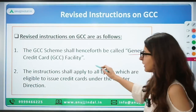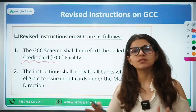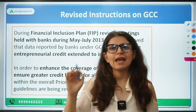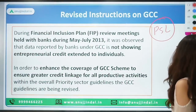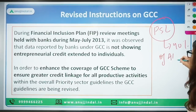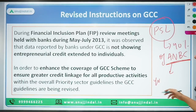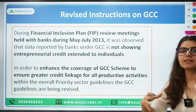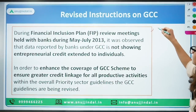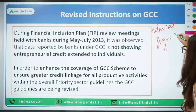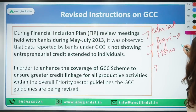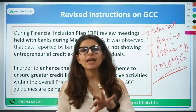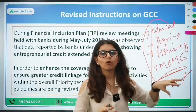The first topic is the GCC — the General Credit Card. Before understanding GCC, let us look at something you already know: PSL, priority sector lending, wherein banks have to give 40% of their adjusted net bank credit to weaker sections of society or priority sectors. These priority sectors can be classified under various heads — for example, education, agriculture loans, housing, MSME, and weaker sections of society.